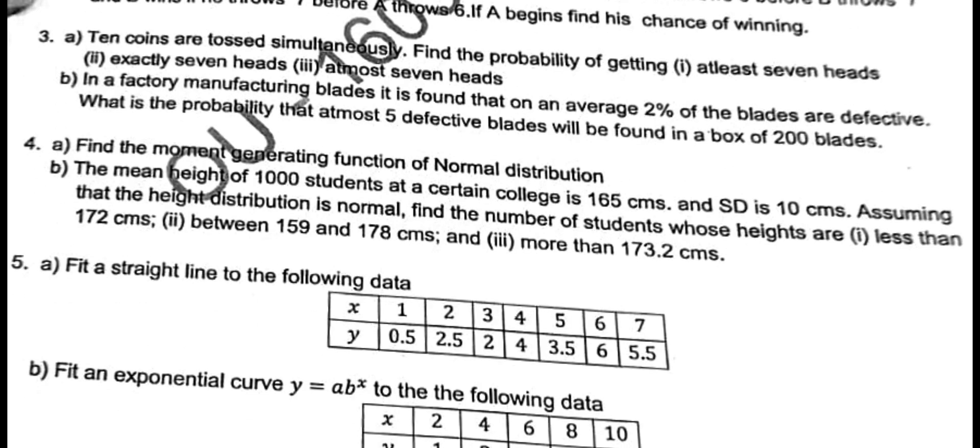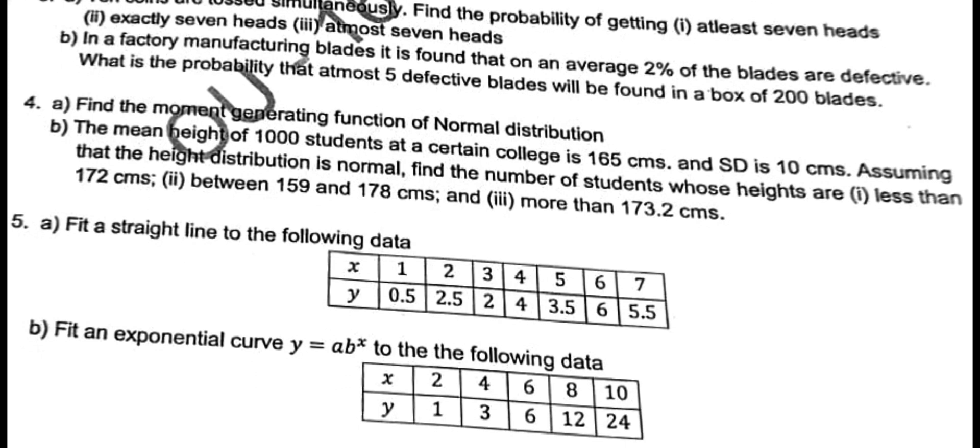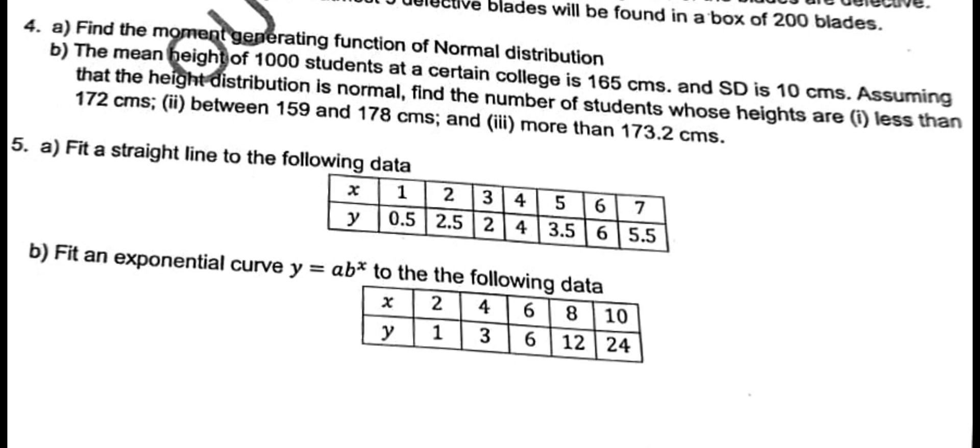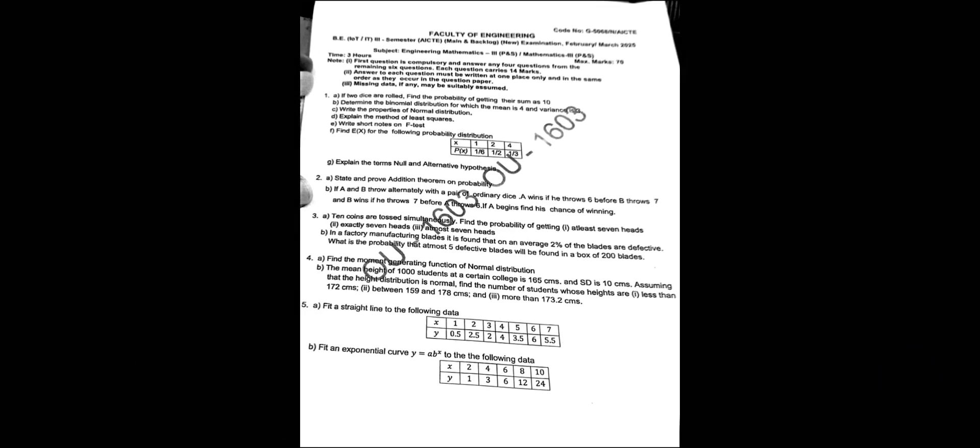Fourth A question is asking moment generating function of normal distribution. So I told you, very important is finding mean, variance and MGF. These all values you have to prepare - these proofs are very important. See here how many questions he covered. Then fourth B he gave again normal distribution problem. Then fifth A is fitting a straight line, simple question. Then fitting an exponential curve he asked here.